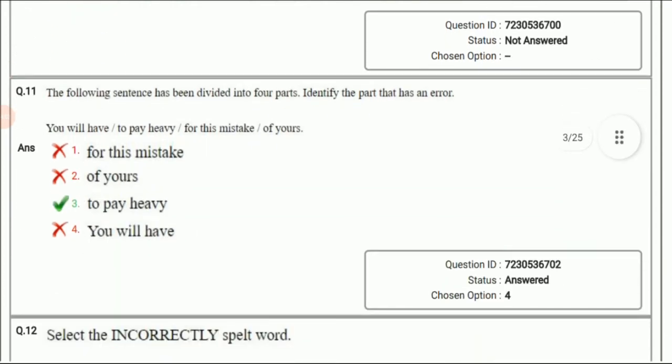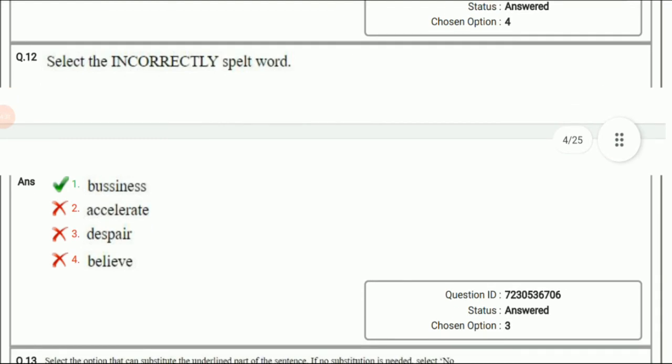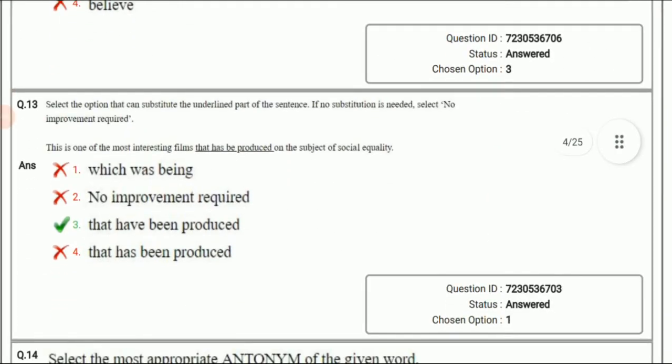Now the next question is from English section. The following sentence has been divided into four parts. Identify the part that has an error. You will have to pay heavy for this mistake of yours. The mistake is in the part 'to pay heavy'. The answer should be 'you will have to pay heavily for this mistake of yours'. The correct option is option 3. Next question, again from English section: Select the incorrectly spelled word. All spellings are correct except for business. The correct spelling is B-U-S-I-N-E-S-S.